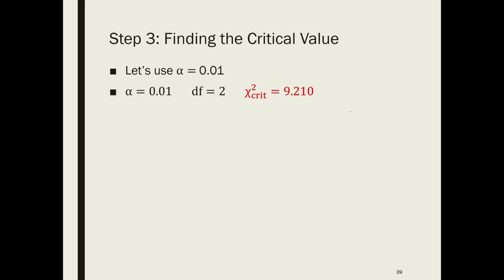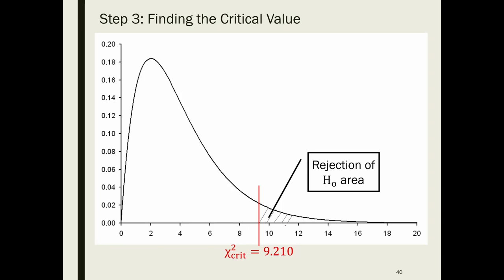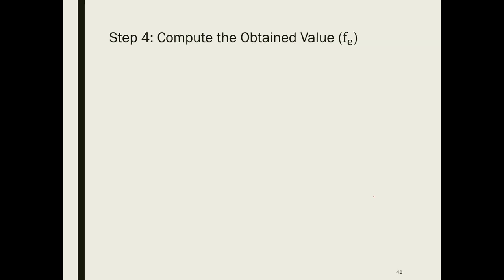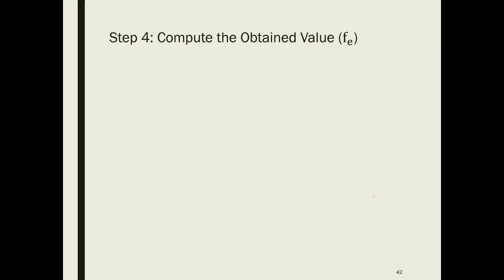With a critical value of 9.210, any obtained chi-square value greater than 9.210 leads us to reject the null hypothesis. Any obtained value less than 9.210 — such as 2, 4, 6, or 8 — leads us to fail to reject the null hypothesis and we must accept it. We then compute the expected frequency for each cell using the same formula: row marginal × column marginal / total sample size.